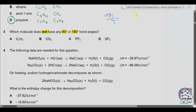Part B is carbon dioxide. The bond angle in carbon dioxide is 180 degrees because the structure is linear. Part C is phosphorus pentafluoride. In phosphorus pentafluoride there are two different types of bond angles present. Three of the fluorine atoms are in the same plane while two are not, giving bond angles of 120 degrees and 90 degrees.